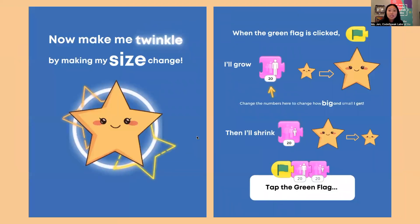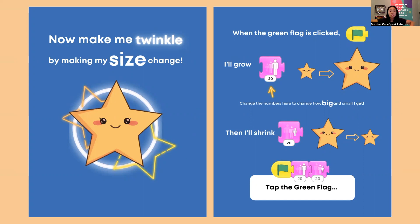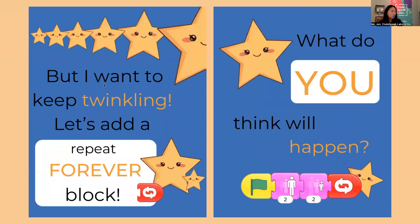Now make me twinkle by making my size change. When the green flag is clicked, I'll grow. So we'll change the numbers to change how big and small I get. Then I'll shrink. Let's tap the green flag. I got big and then small.